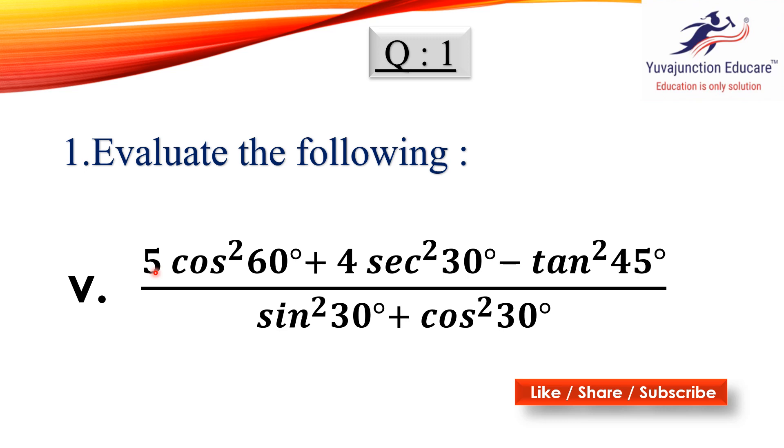Now what is given: 5 cos²60 plus 4 sec²30 minus tan²45 divided by sin²30 plus cos²30. This is what we have to do.